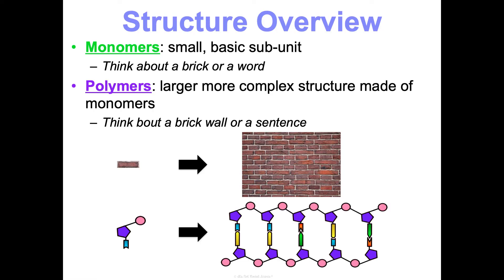Here is an example actually related to macromolecules. Here is a diagram of DNA, which is a nucleic acid. Here is one nucleotide — nucleotides are the monomers of the polymer DNA. You can see one nucleotide here, and you can spot it within the larger molecule. As we talk through the structure of each macromolecule, we'll discuss the monomers and the polymers they build into.